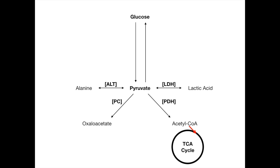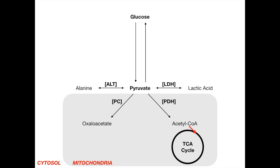One important distinction: the reactions going from pyruvate to oxaloacetate and from pyruvate to acetyl-CoA are irreversible reactions, shown with one-sided arrows. In contrast, pyruvate to lactic acid and pyruvate to alanine are reversible reactions. Also, oxaloacetate and acetyl-CoA are formed from pyruvate in the mitochondria, whereas pyruvate to alanine and pyruvate to lactic acid occur in the cytosol. Test writers have been known to ask exactly where these reactions take place.